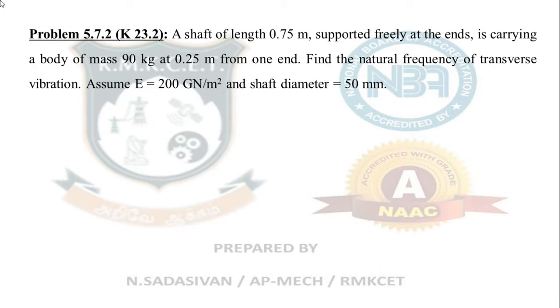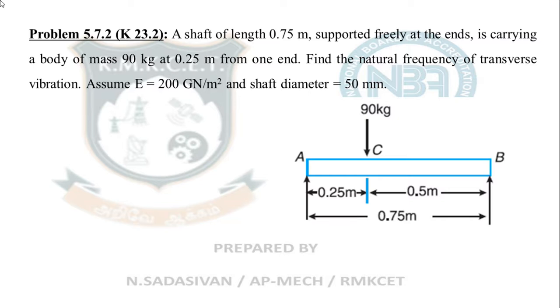A shaft of length 0.75 meter supported freely at the ends is carrying a body of mass 90 kg at 0.25 meter from one of the end. Look at the diagram. As I read the question, you just look at the diagram and listen to my words. This one end means it could be either from the left or the right. Both are correct. You can do it in any way you want.